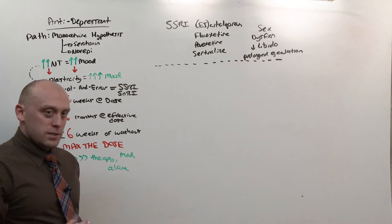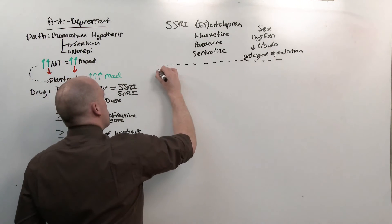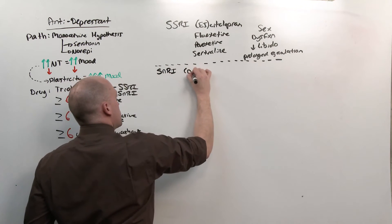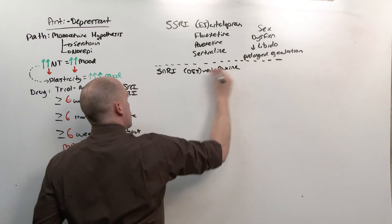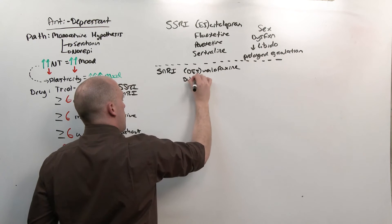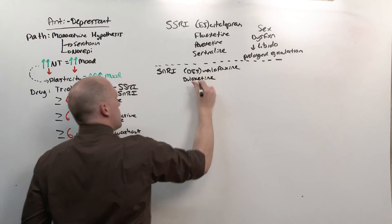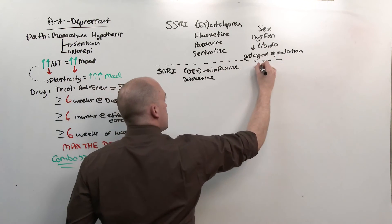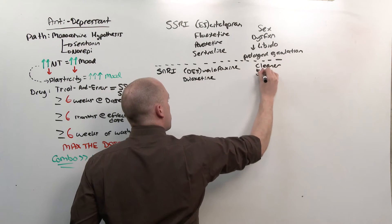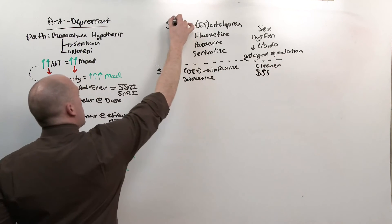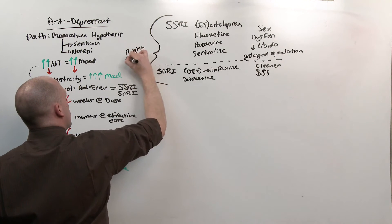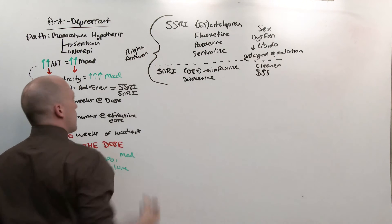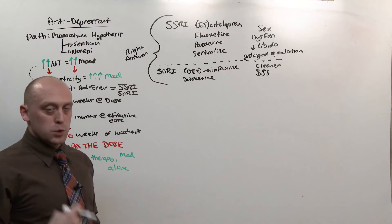The SNRIs, serotonin and norepinephrine reuptake inhibitors, are going to be desvenlafaxine and duloxetine. The SNRIs tend to be better and cleaner. They just cost more money. An SSRI or an SNRI is always the right answer. If you have to pick, you should not have to choose between them.